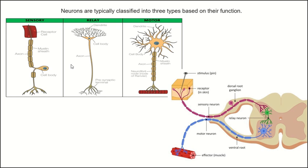Neurons are classified into three types based on their function. The first type are sensory neurons. Sensory neurons respond to stimuli such as touch, sound, or light that affect the cells of the sensory organs, and they send signals to the spinal cord or brain. As you can see, this sensory neuron is connected to the skin, which is a sensory organ, and it converts the stimulus into a sensory message passed to the spinal cord.